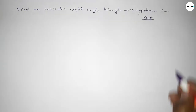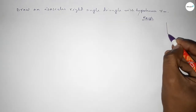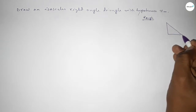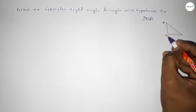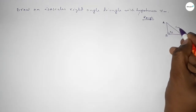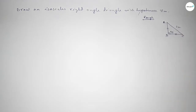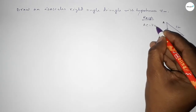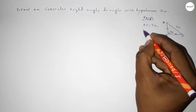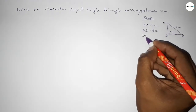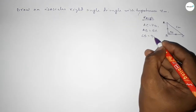First, drawing here an isosceles right angle triangle roughly: A, B, C. So this is A, B, C, and angle B equals 90 degrees. The hypotenuse is 7 centimeters. This side and this side are equal, so AC equals 7 centimeters. The two equal sides are AB equal to BC, and angle B equals 90 degrees.